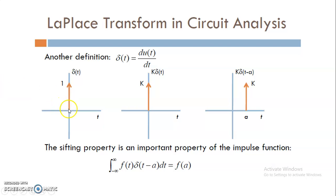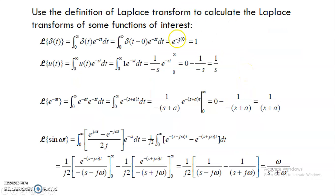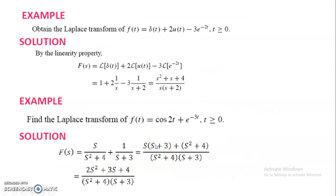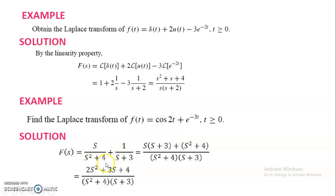The delta function at t equals 0 can be scaled as k times delta of t, and shifted as k times delta of t minus a. Using examples: the Laplace transform of delta of t is 1; the Laplace transform of u of t is 1 over s; and e raised to minus 2t gives 1 over s plus 2. For the cosine function with omega equals 2, it will be s over s squared plus 4. For e raised to minus 3t, it is 1 over s plus 3.